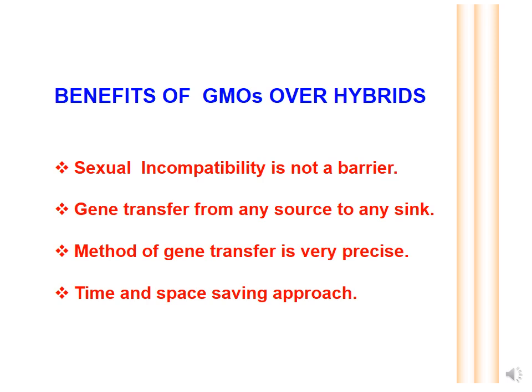Now let us discuss the benefits of GMOs over hybrids. In GMOs, sexual incompatibility is not a barrier — the gene can be transferred from any source to any sink. For example, we can take a gene from a cat and transfer it to a dog, from a plant to an animal, or from a prokaryote to a eukaryote. In traditional breeding, this does not happen.